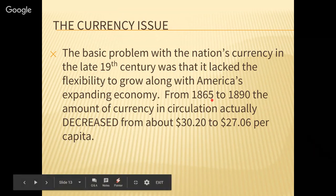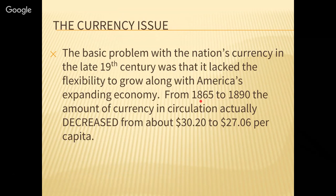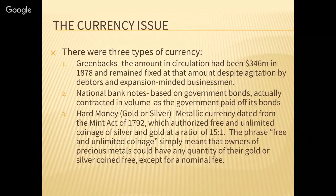In a nutshell — and this is important to write down — there's a limited amount of cash for more and more people. The country's growing, the population's growing, the economy's growing, but the money supply is not. That's causing what we call a money crunch — too many people and not enough cash to go around. So let's talk about currency. There are basically three kinds of currency.